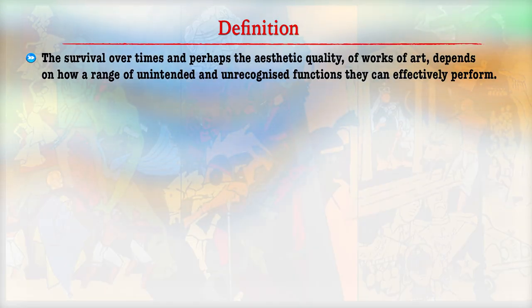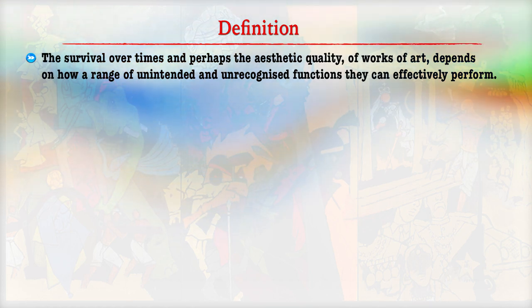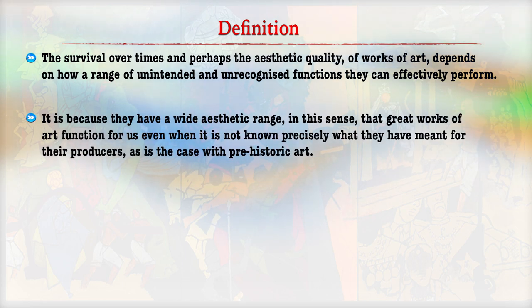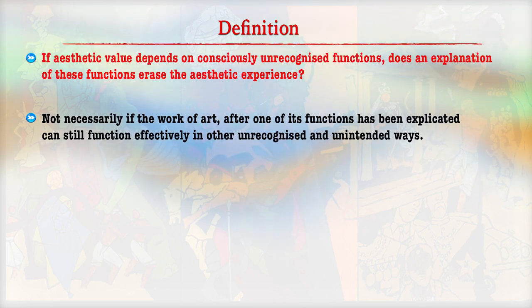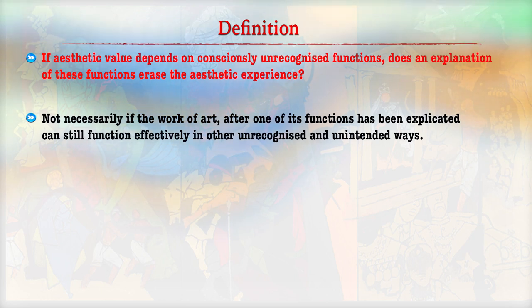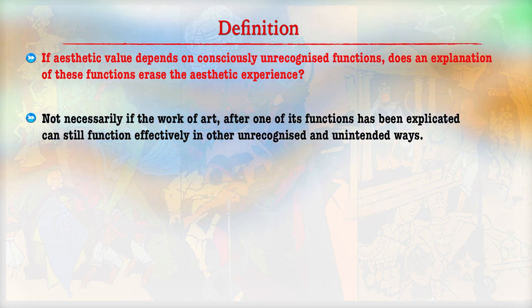Second, the painter must be ready to perform various functions. It is not only specialized but also based on a particular set of circumstances. It must remain generalized to some extent but must also have new innovative features. The survival over time and the artistic quality of the work depends on the number of functions they effectively perform. If we have a wide aesthetic range, then the work of art functions more precisely and is very relevant for its producers and for society. Therefore, we must appreciate the aesthetic value of the painting, which depends on consciously unrecognized functions also. Painting is a work of art; it is a performing activity and functions effectively in all cultures.